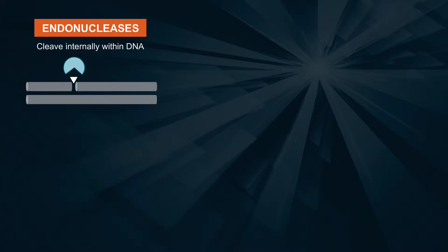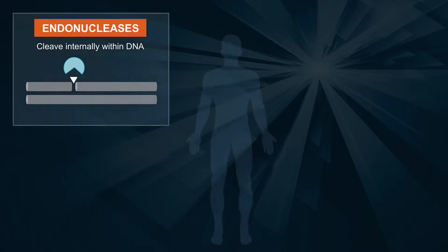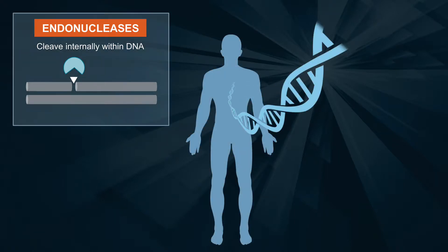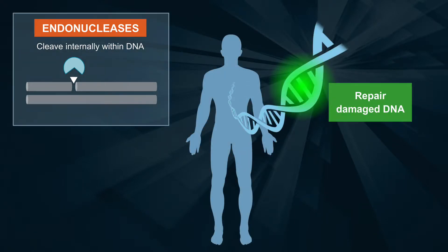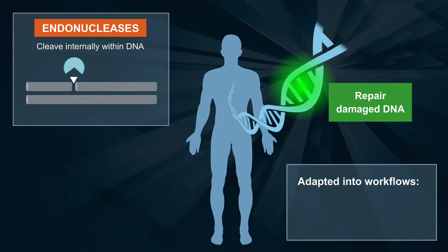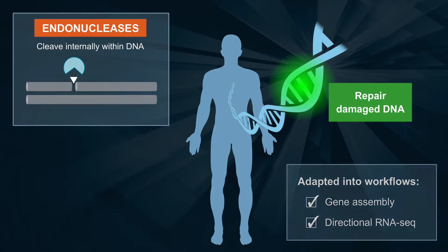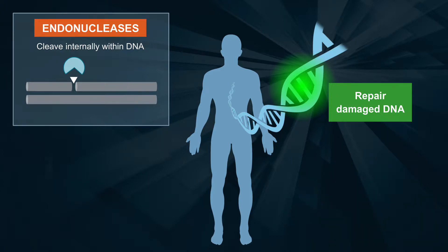In vivo, many endonucleases are involved in the repair of damaged DNA. Many of these enzymes have been adapted into workflows such as gene assembly and directional RNA-seq. Here we will be highlighting two types of endonucleases: structure-independent and structure-dependent.